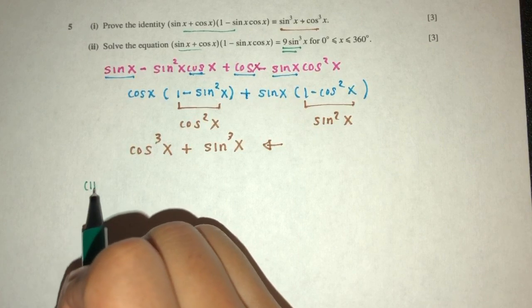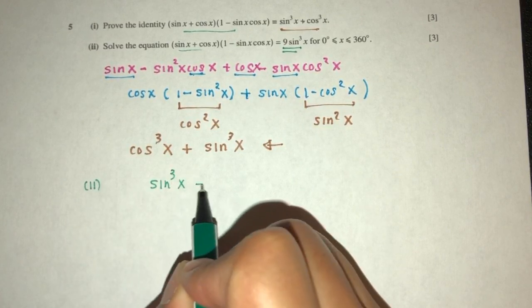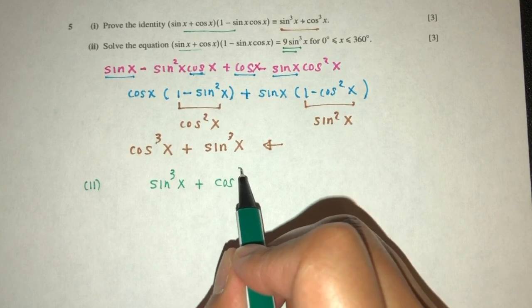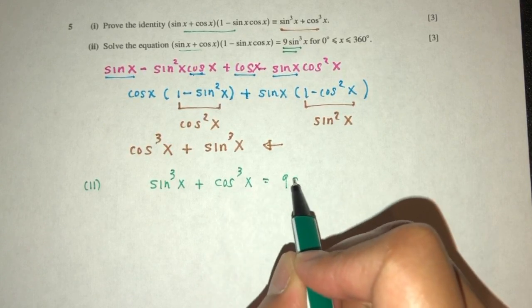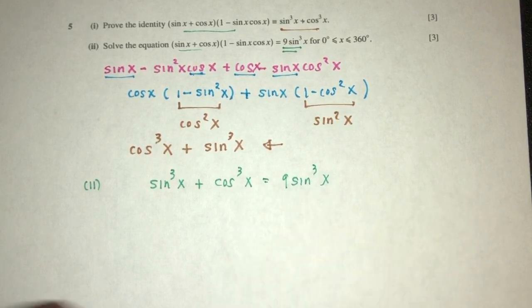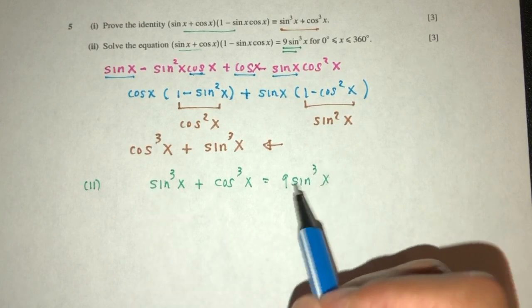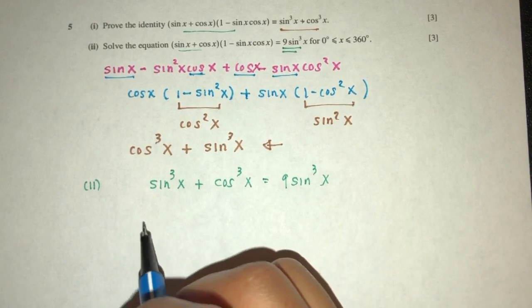So part 2, that will be sin³x plus cos³x is equal to 9 sin³x. So simplify, send this over here or this over here.